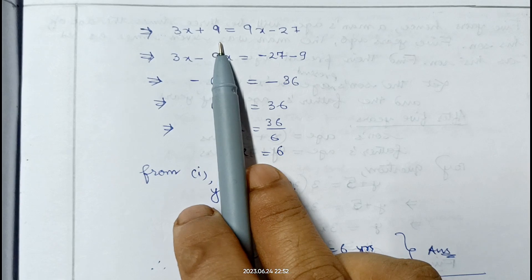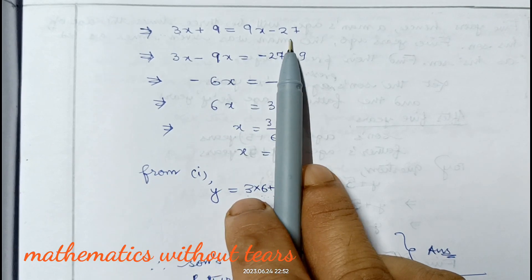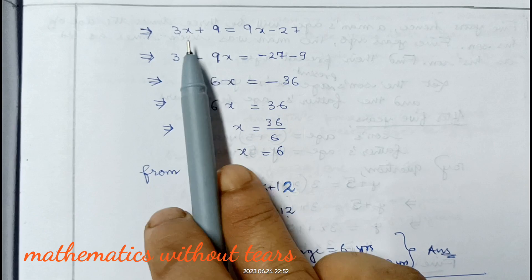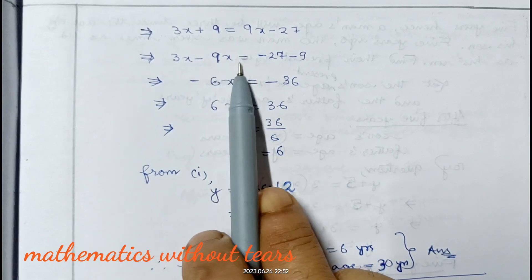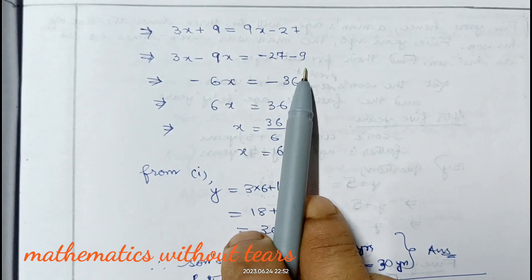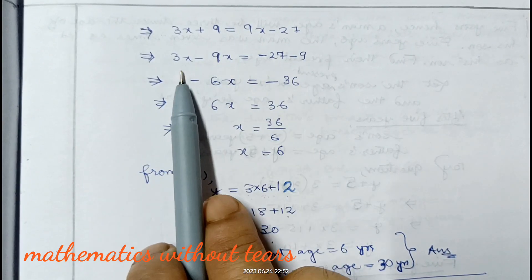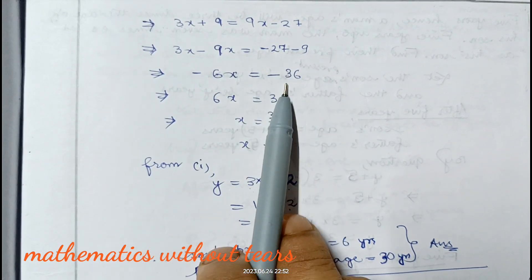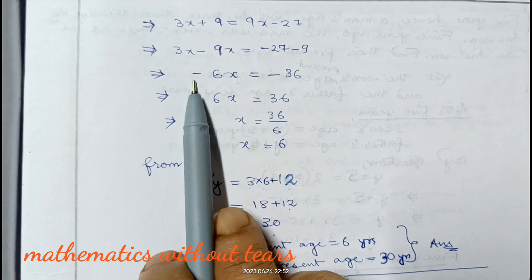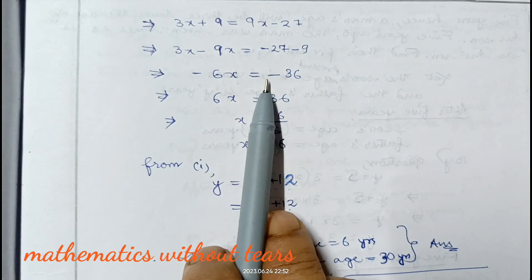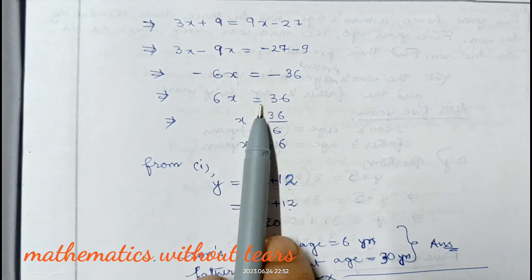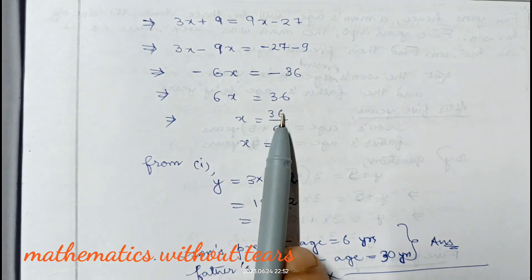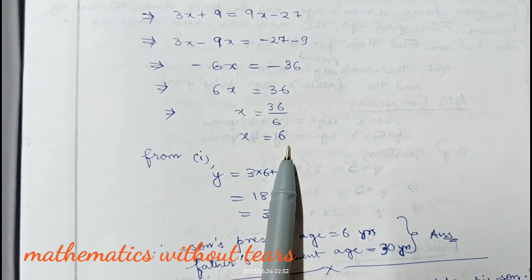So 3x plus 9 equals 9x minus 27. Transferring 9x to the other side: 3x minus 9x equals minus 27 minus 9, giving minus 6x equals minus 36. Multiplying both sides by minus 1: 6x equals 36, so x equals 6 years.